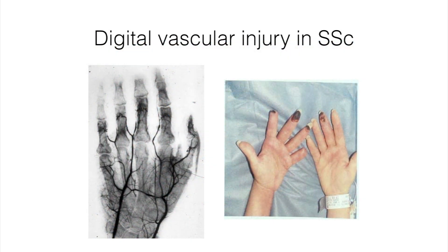An arteriogram, where dye is injected into blood vessels to visualize blood flow, shows that in the palm of the hand blood flow is still pretty good, but as you go distally to the fingertips there is a sharp cutoff of blood flow to the fingers. This can lead to serious problems like gangrene, and this patient had multiple fingers affected with gangrene due to decreased blood flow, even requiring amputation of the fingertips.